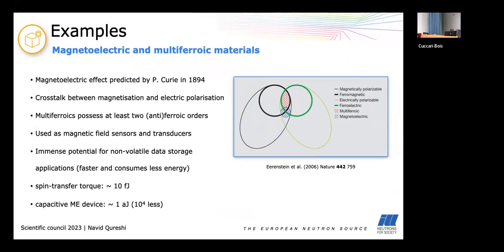So the magnetoelectric effect was already predicted at the end of the 19th century by Pierre Curie and it is a material property which enables the crosstalk between electric polarization and magnetization. So you can electrically polarize your sample with a magnetic field and vice versa. Multiferroics possess at least two spontaneous orders and here I will limit myself to magnetoelectric multiferroics so we're talking about magnetic order and electric polarization.